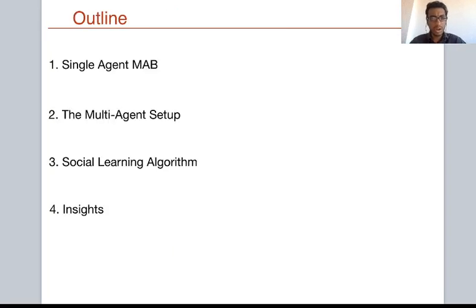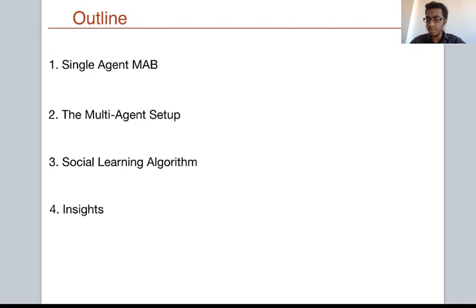So with this background, here is the outline of my talk. I'll first introduce the single-agent multi-arm bandit problem and discuss some known classical results, then motivate our problem setting of the multi-agent multi-arm bandit. I will then give our social learning algorithm and conclude with some insights.